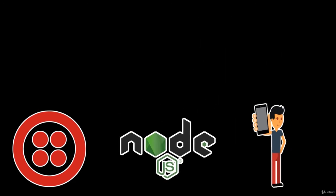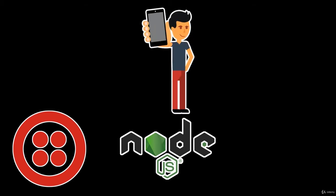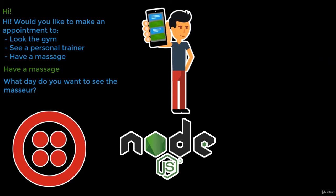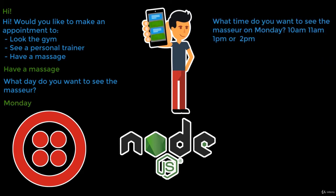Let's see how the application is going to work. First, a customer will send a message saying 'Hi' and our application will reply 'Hi, would you like to have an appointment to look to the gym, see the personal trainer or have a massage?' The customer replies 'Have a massage' and we would ask 'What day do you want to see the masseur?' The customer says 'Monday' and we reply 'What time do you want to see the masseur on Monday? 10 a.m., 11 a.m., 1 p.m. or 2 p.m.?'